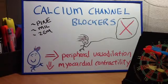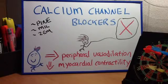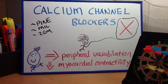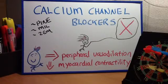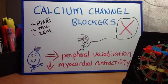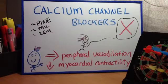Side effects include bradycardia and heart block, particularly with verapamil and diltiazem, as well as hypotension and peripheral edema. Use caution in patients with decreased ejection fraction because of the negative inotropic effects of calcium channel blockers.